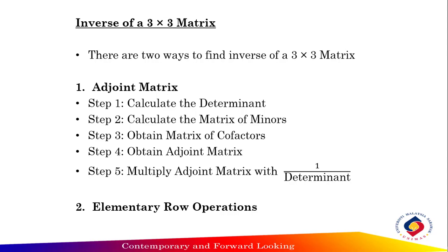Next we will learn how to find the inverse of a 3 by 3 matrix. There are two ways: first method is the adjoint matrix. Step one: calculate the determinant, then calculate the matrix of minors, obtain the matrix of cofactors, obtain the adjoint matrix, and lastly multiply the adjoint matrix with 1 over the determinant. The second method is elementary row operation.